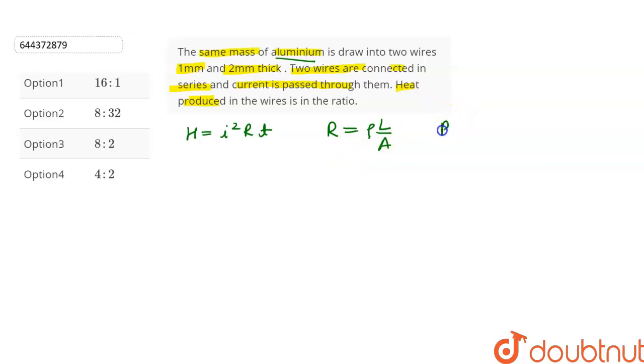So we can write the resistance of wire 1 will be equal to ρl₁/A₁ and the resistance of wire 2 will be R₂ which is ρl₂/A₂.